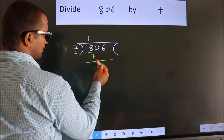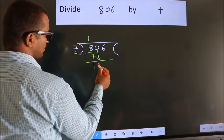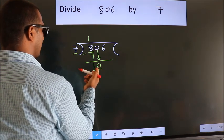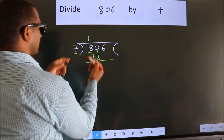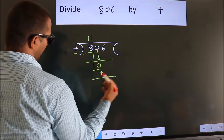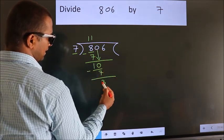After this, bring down the beside number. So 0 down. So 10. A number close to 10 in 7 table is 7 once 7. Now we subtract. We get 3.